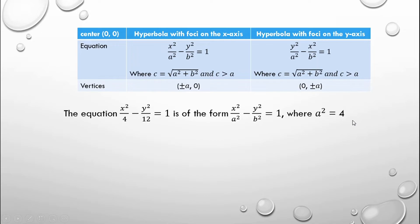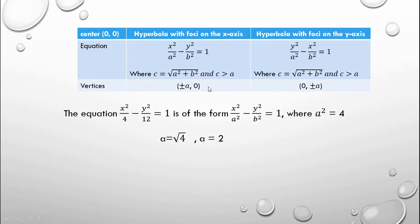Here, a squared is equal to 4, because a squared is the denominator of x squared, and the denominator of x squared in our equation is 4. To get a, take the square root of both sides: the square root of 4 is 2. Now using the ordered pair for the vertex, which is positive-negative a, 0, we substitute 2 for a. So the vertices are positive-negative 2, 0. The answer is letter B.